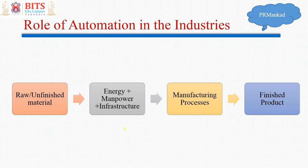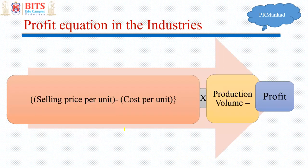Now, what is the role of automation in industry? In an industry, a raw or unfinished material is processed using energy, manpower, and infrastructure. You apply some manufacturing process and get a finished product. At different levels you can use automation to make the overall process smooth and get a better product and better profit. The profit equation for industries is simple: selling price per unit minus cost per unit.